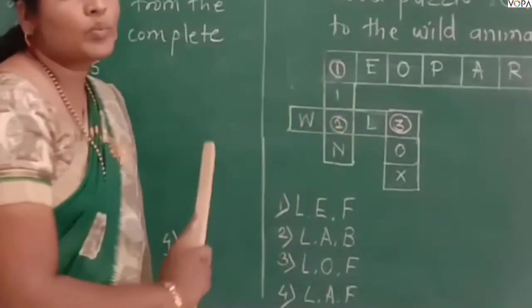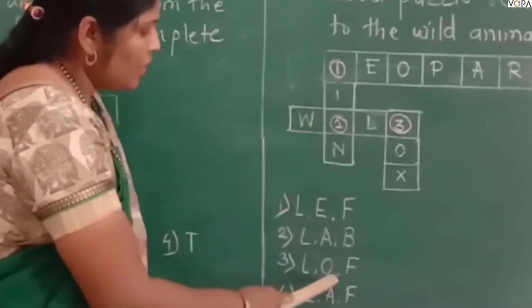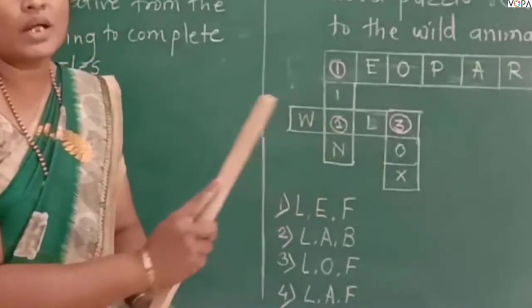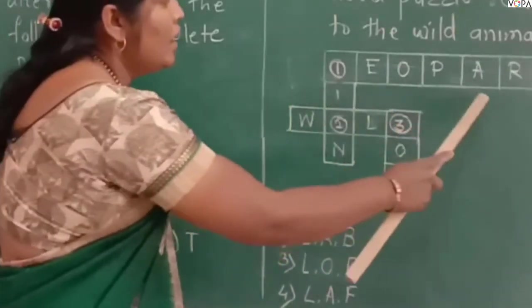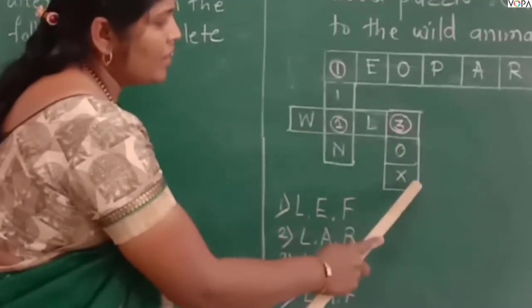The correct options are: 1 is L, 2 is O, and 3 is F. The answers are leopard, lion, and fox.